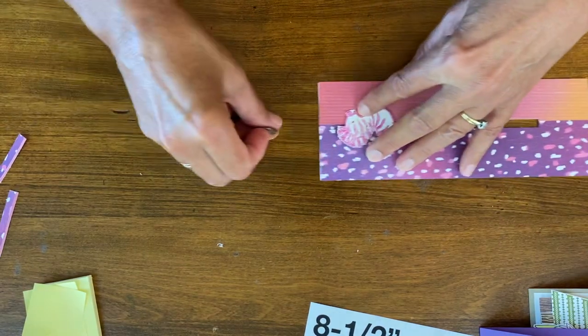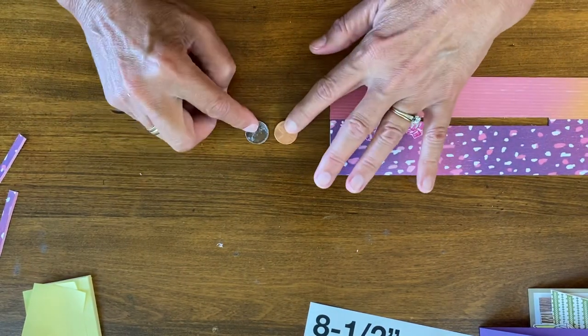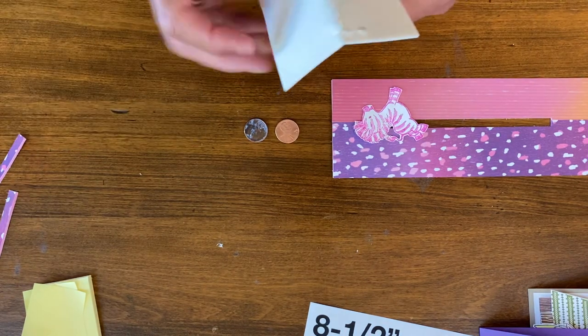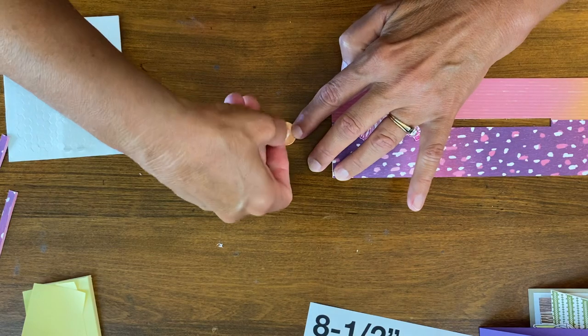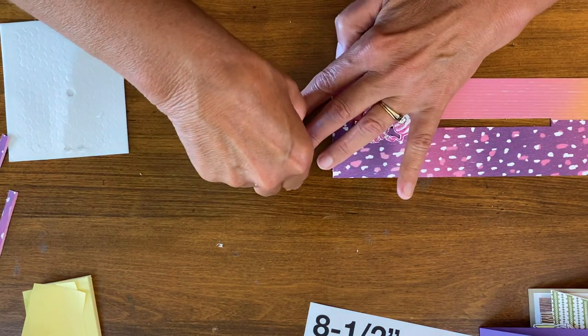And now I'm going to take pennies. So I've got a decent looking one and a terrible looking one, but no one's ever going to know if they don't take my card apart. And I'm going to put a mini Stampin' Dimensional right in the middle there.